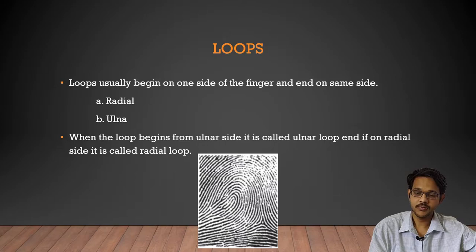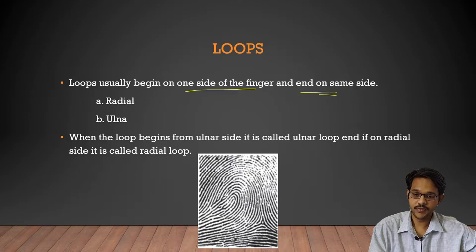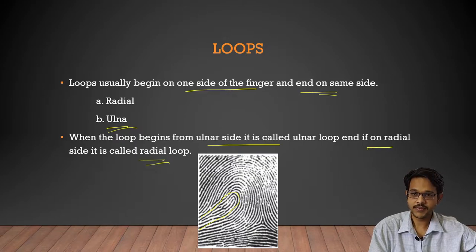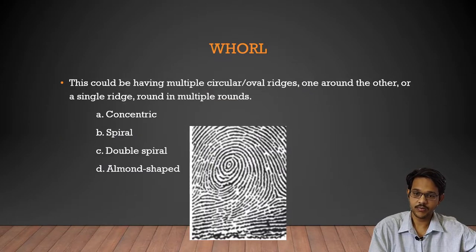Loops usually begin on one side of the finger and end on the same side. If the loop begins from the ulnar side it is called an ulnar loop; if it begins on the radial side it is called a radial loop. So there are two subtypes: radial and ulnar loops.